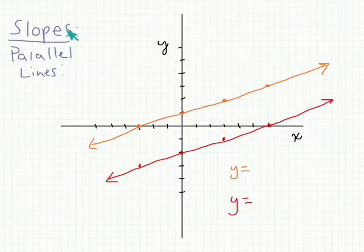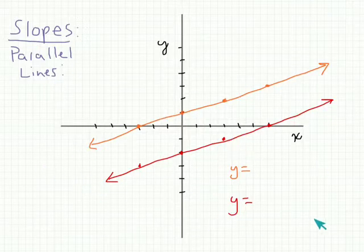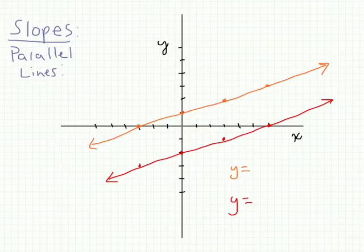First, we're looking at parallel lines. I'll just confirm that these are parallel lines. Let's write the equation of these two lines and then make observations about how slopes look when lines are parallel. Starting with our orange line — the y-intercept is 1, so we know that's going to be plus 1 at the end.